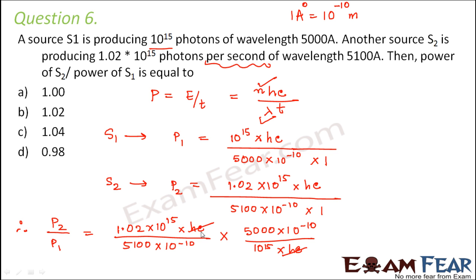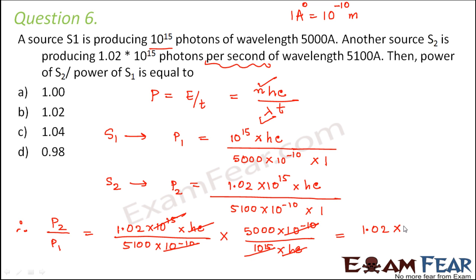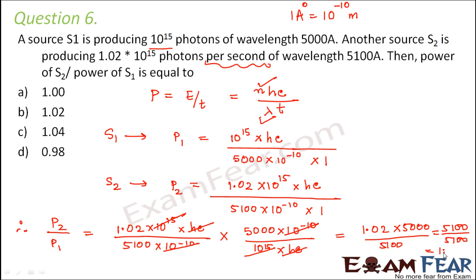Now we calculate P2 by P1. The Hc terms cancel, the powers of 10 to the power 15 cancel, and the 10 to the power minus 10 terms cancel. So we are left with 1.02 times 5000 divided by 5100, which equals 5100 divided by 5100, which equals 1 to 1. So that's the ratio, and the answer is A.